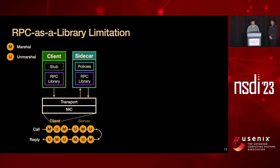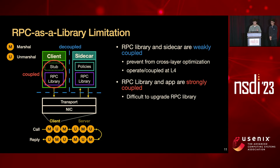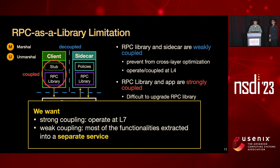We do not see much hope in continuing to optimize the RPC library and sidecar approach for two reasons. First, there is only weak or no coupling between an RPC library and its sidecar, which prevents cross-layer optimization. Second, a strong coupling exists between the RPC library and its application, which makes upgrading the RPC library without stopping the application difficult, if not impossible. The takeaway is that to solve these limitations, we want strong coupling in the sense that we operate and forward RPC at layer 7 rather than at the packet level, and weak coupling in the sense that most RPC functionalities are extracted into a separate service.